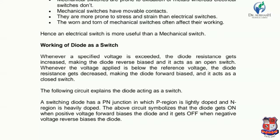Regarding the forward bias and reverse bias phenomena: in forward bias, current is maximum and resistance is minimum. In reverse bias, current is minimum and resistance is maximum. The following circuit explains the diode acting as a switch.